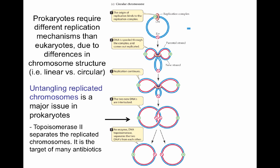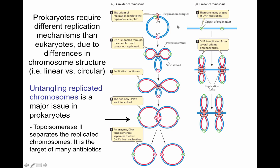The linear chromosomes have multiple origins of replication where replication begins. Once the parental strands have passed through, the replication fork falls off. So you do not have the same problem of untangling the chromosomes as you have in prokaryotes.